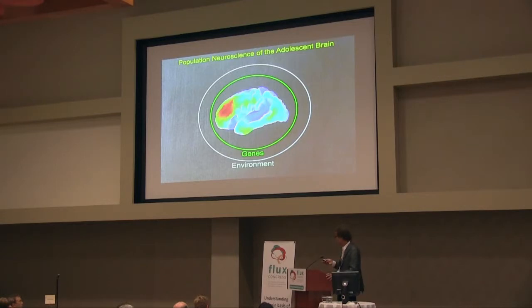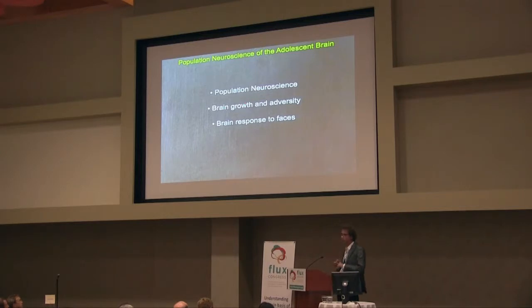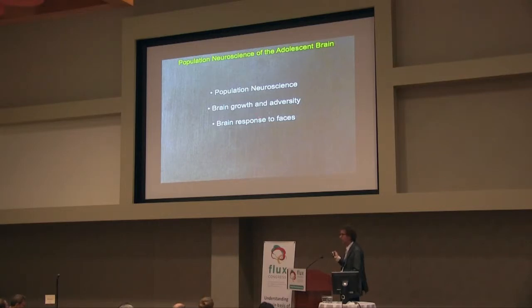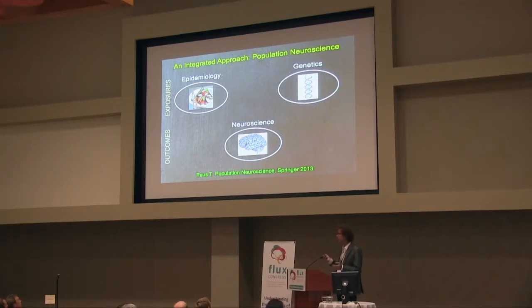In order to understand what is shaping the brain, we really don't have any other choice but to go to genes and the environment and their interplay. One way of doing it is to bring together three disciplines in the context of population neuroscience: epidemiology, genetics, and neuroscience. I'll start by telling you a bit about it and then give you two examples.